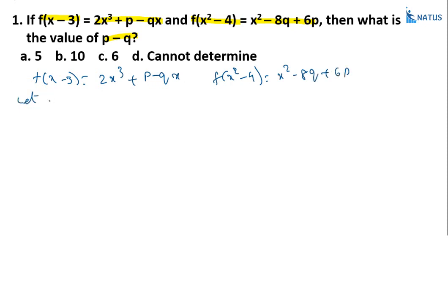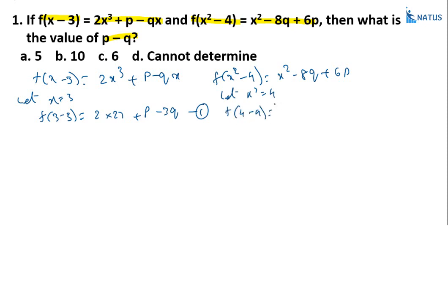Let x = 3, then f(3 - 3) = f(0) = 2(27) + p - 3q, which is the first equation. Next, let x² = 4, then f(4 - 4) = f(0) = 4 - 8q + 6p, which is the second equation.